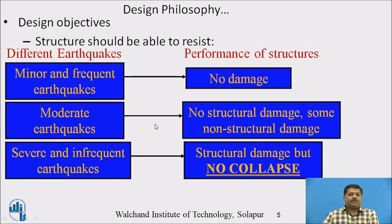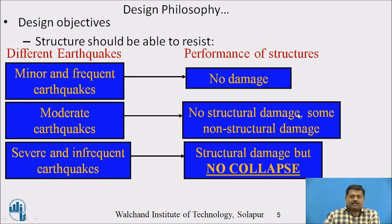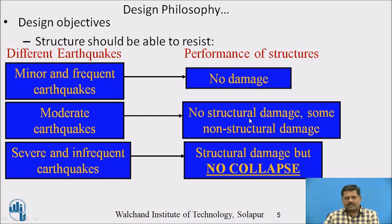The objectives behind this philosophy define how the structure should perform when an earthquake occurs. For minor and frequent earthquakes, there should be no damage to the structure. For moderate earthquakes, there should be no structural damage but some non-structural damage is acceptable, such as plaster cracking, ceiling plaster falling, or parapet damage. The structural elements should remain intact without damage.